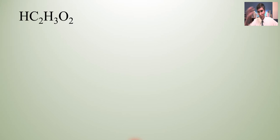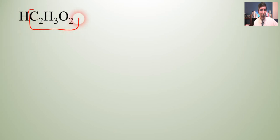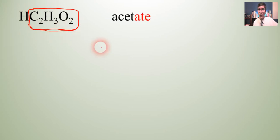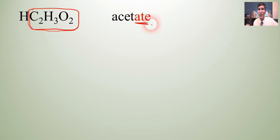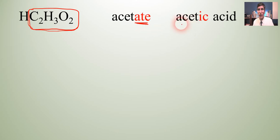We have HC2H3O2. We're going to ignore the H for the time being and focus just on the anion. The name of that anion is acetate. Now acetate has '-ate' as its suffix, so we're going to drop that A-T-E and put '-ic' on the end, so it becomes acetic acid. '-ate' changes to '-ic'.